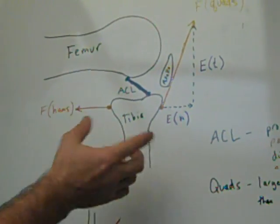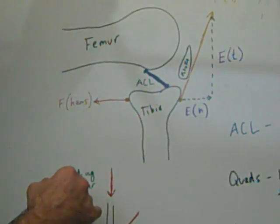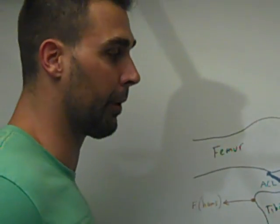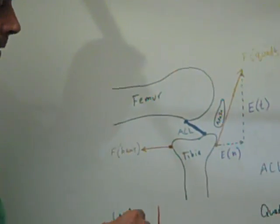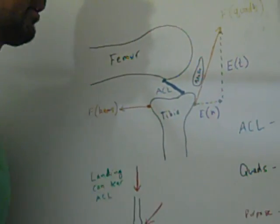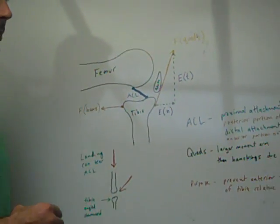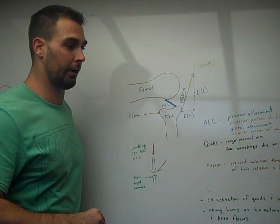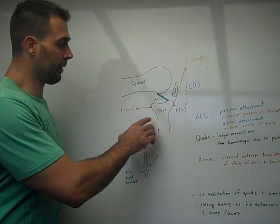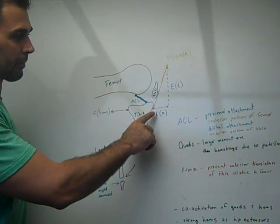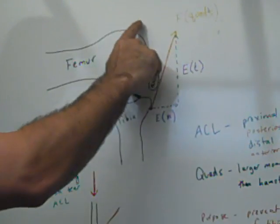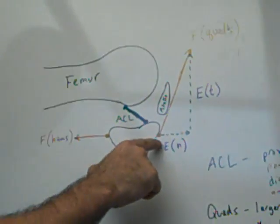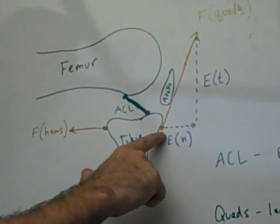So as most people know, ACL injuries are very prominent in sports, and we want to be able to do whatever we can to prevent these injuries from happening. So it's important to understand the biomechanics of these injuries to really be able to train in strength training to prevent those injuries. So here's a diagram that shows the quadriceps, they come around and envelop the patella and attach here on the tibia.